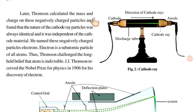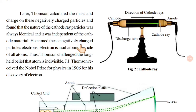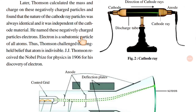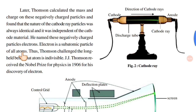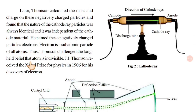Later, Thomson calculated the mass and charge on these negatively charged particles and found that the nature of the cathode ray particles are always identical and it was independent of the cathode material. He named these negatively charged particles electrons. Electrons are a subatomic particle of all atoms. Thus, Thomson challenged the long-held belief that atom is indivisible. J.J. Thomson received the Nobel Prize for Physics in 1906 for his discovery of the electron.